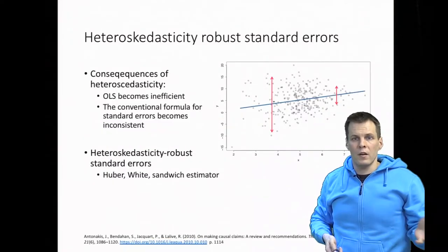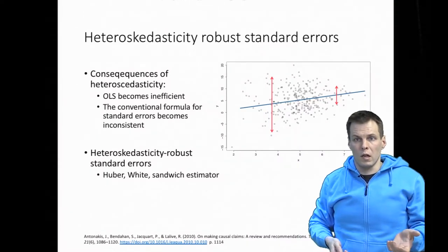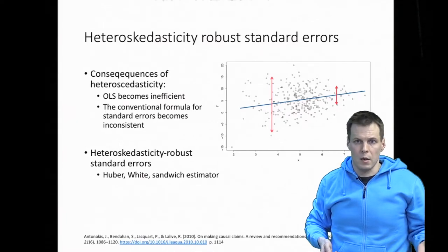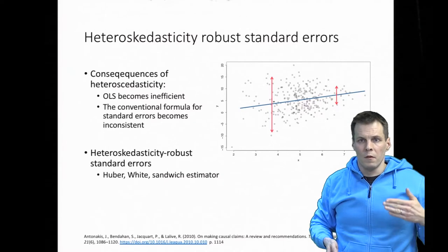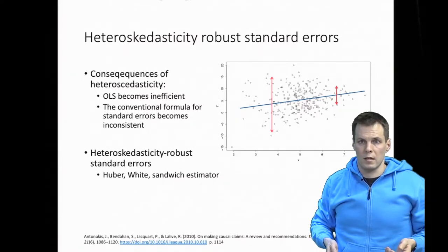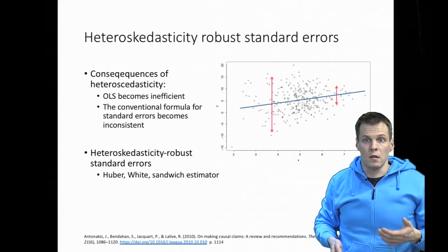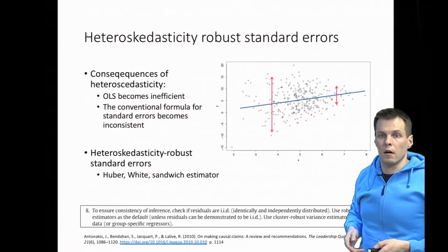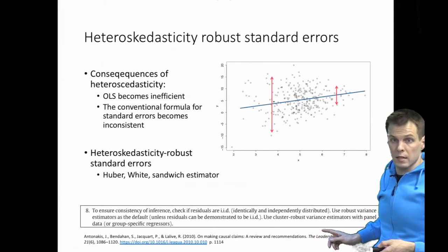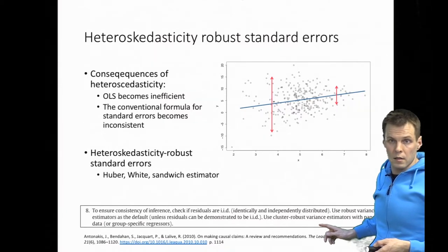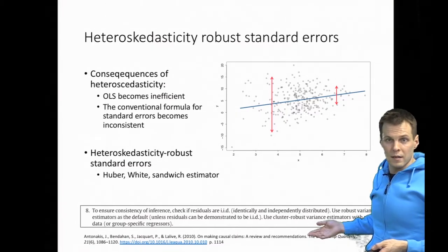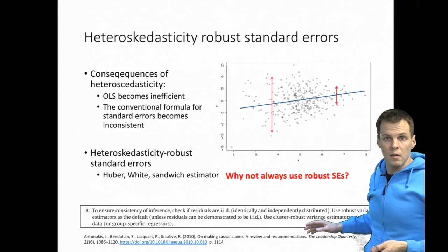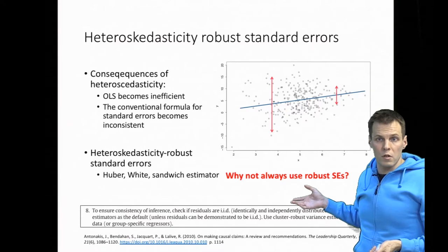What do we do about this? The simplest option is to live with the inefficiency, which may not be substantial anyway, but the standard error bias is a real problem. Fortunately, we can apply heteroscedasticity-robust standard errors, which produce consistent standard errors even under heteroscedasticity. Some researchers, such as Antonakis in his 2010 paper, argue you should always apply robust standard errors as a rule. But not everyone agrees.